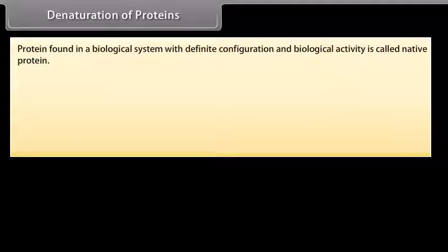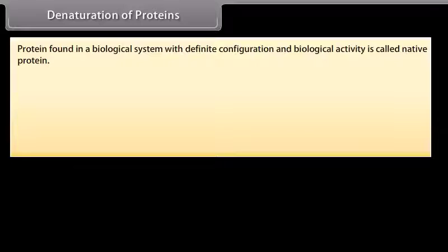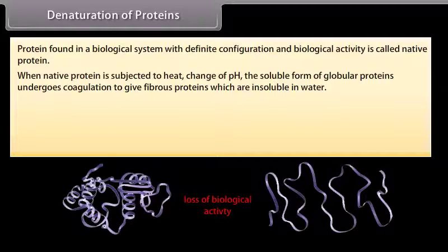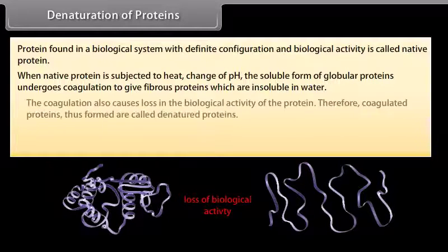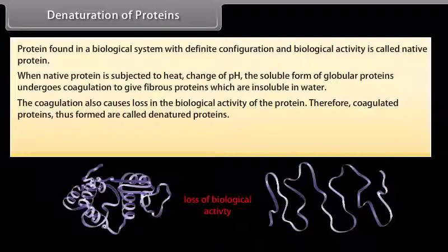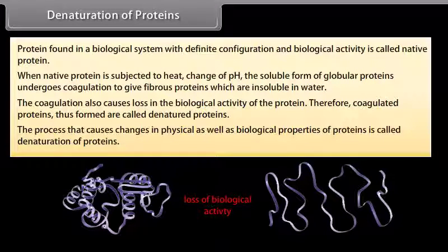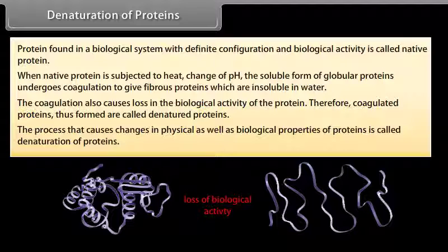Denaturation of proteins. Protein found in a biological system with a definite configuration and biological activity is called native protein. When native protein is subjected to heat or change of pH, the soluble form of globular proteins undergoes coagulation to give fibrous proteins, which are insoluble in water. The coagulation also causes loss in the biological activity of the protein; therefore, the coagulated proteins thus formed are called denatured proteins. The process that causes changes in physical as well as biological properties of proteins is called denaturation of proteins. For example, coagulation of egg on boiling and curdling of milk.